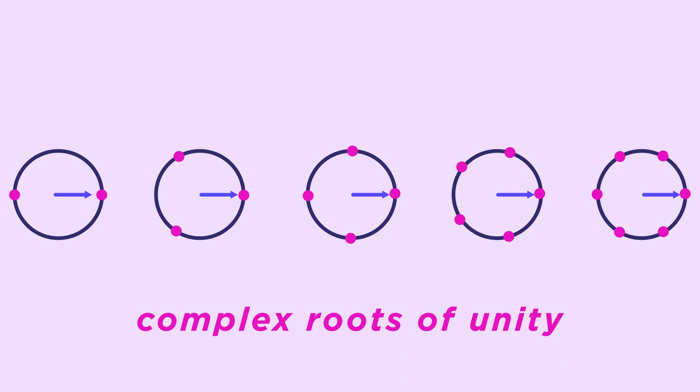Start with a bunch of circles. On the first, we'll put two equally spaced dots. On the next, we'll put three equally spaced dots. On the next, four equally spaced dots, and so on. Notice that we always put one of the dots on the middle right side, the zero degree angle. Start a dial on that special point. By the way, these dots are called complex roots of unity.